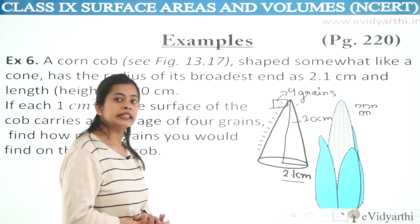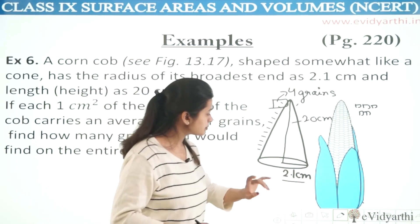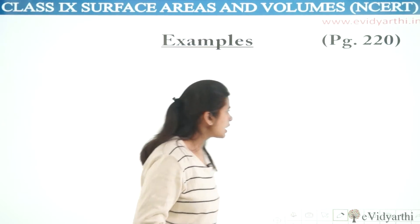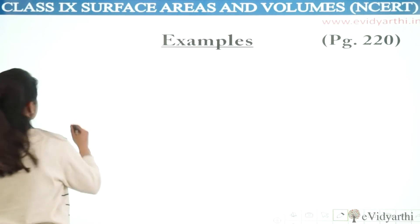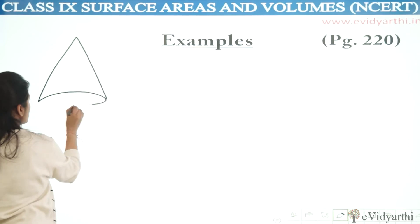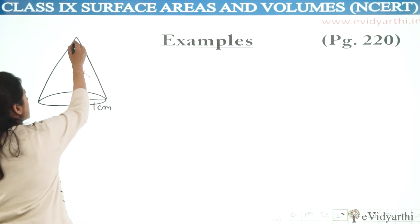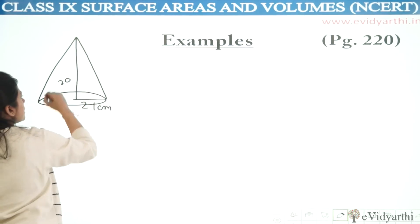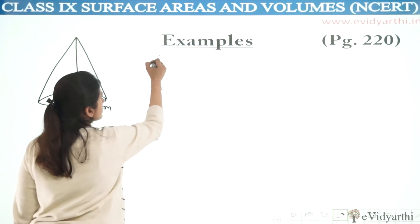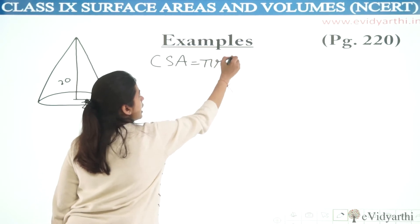Step by step, we will see how to get the answer. If we talk about the broadest end part, all the grains are on the top curved surface area — not the base. So that means what we are going to consider here is only the curved surface area of the cob. We will talk about the curved surface area because below the base the grains are not present. Now, what is the curved surface area? Curved surface area is equal to π r l.